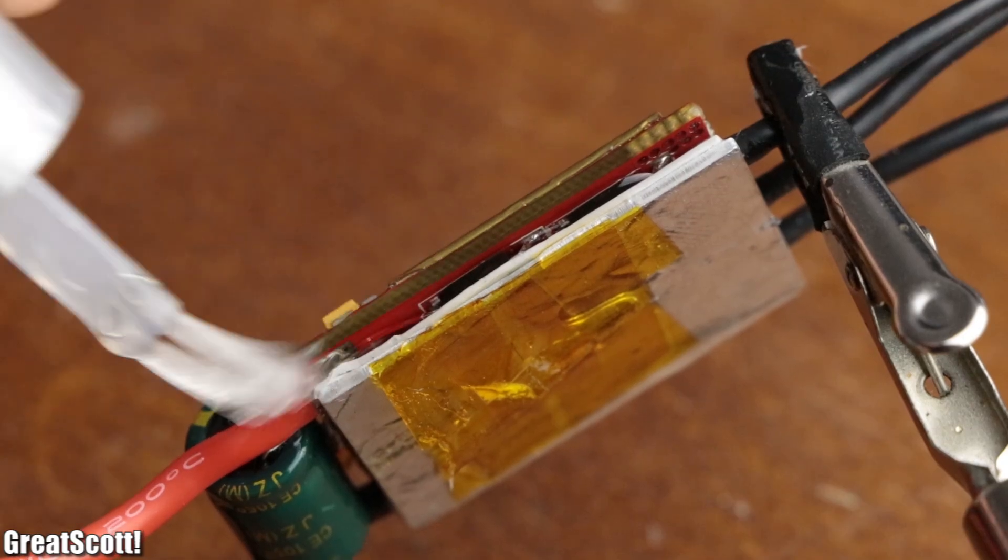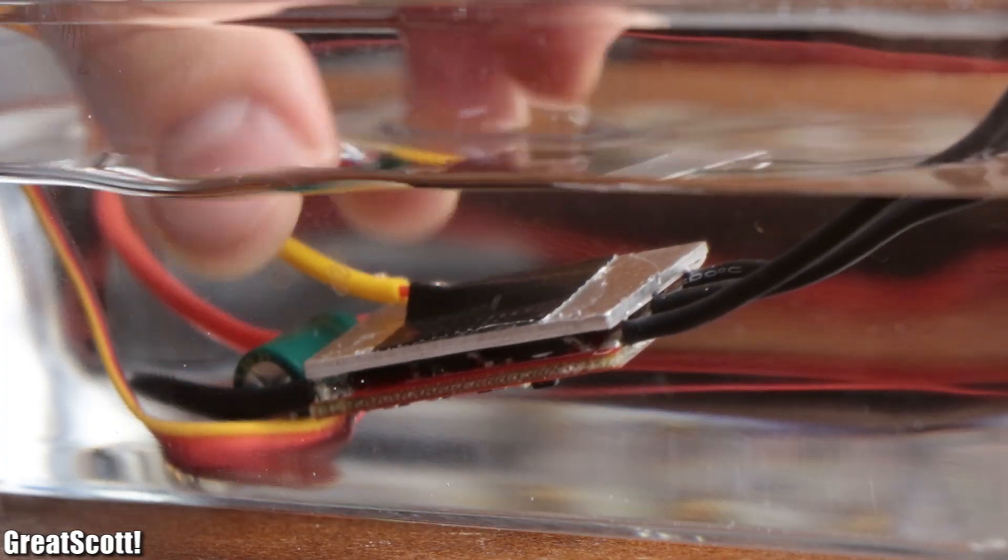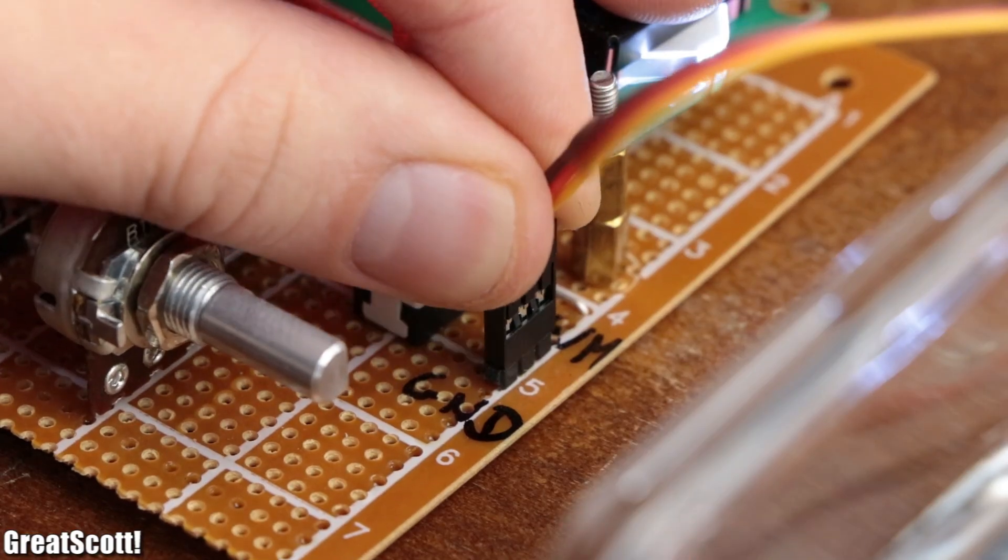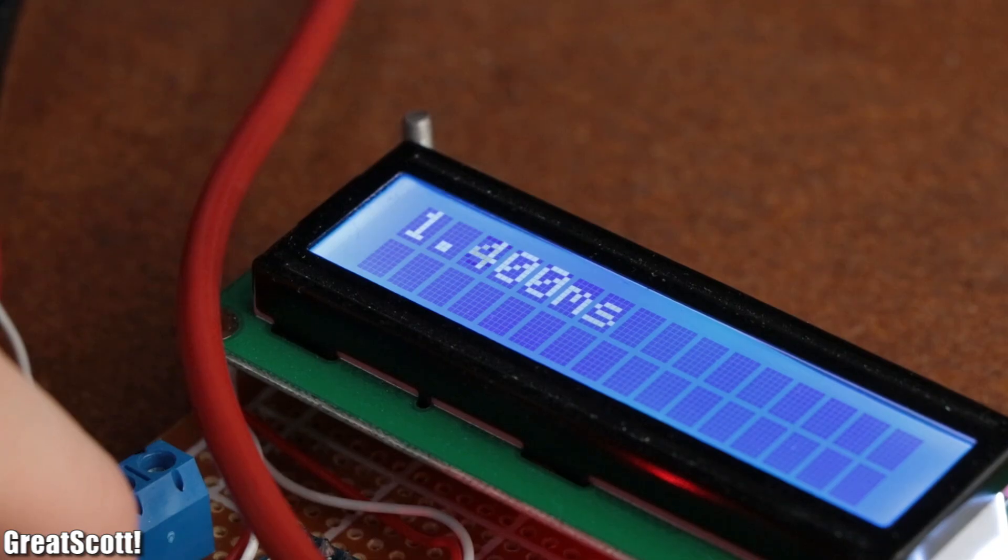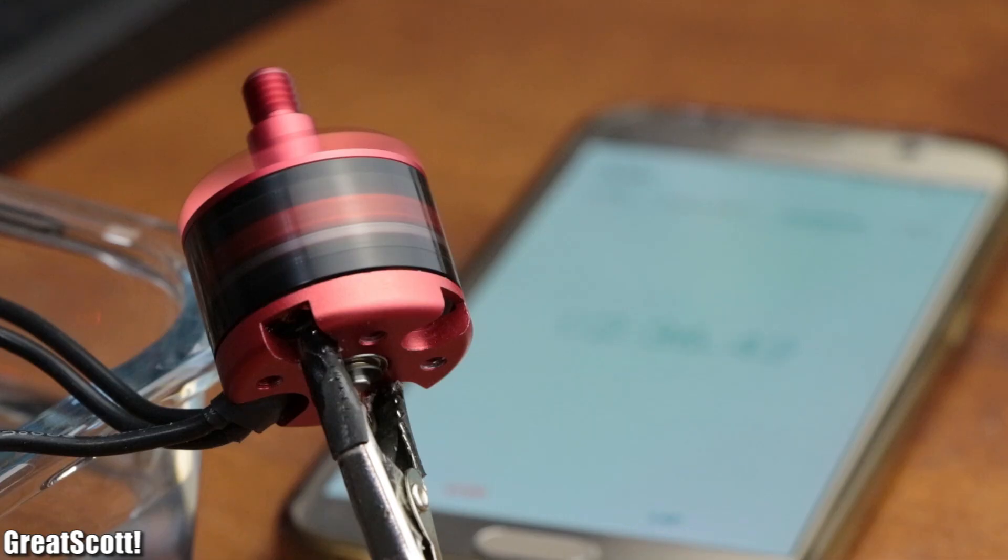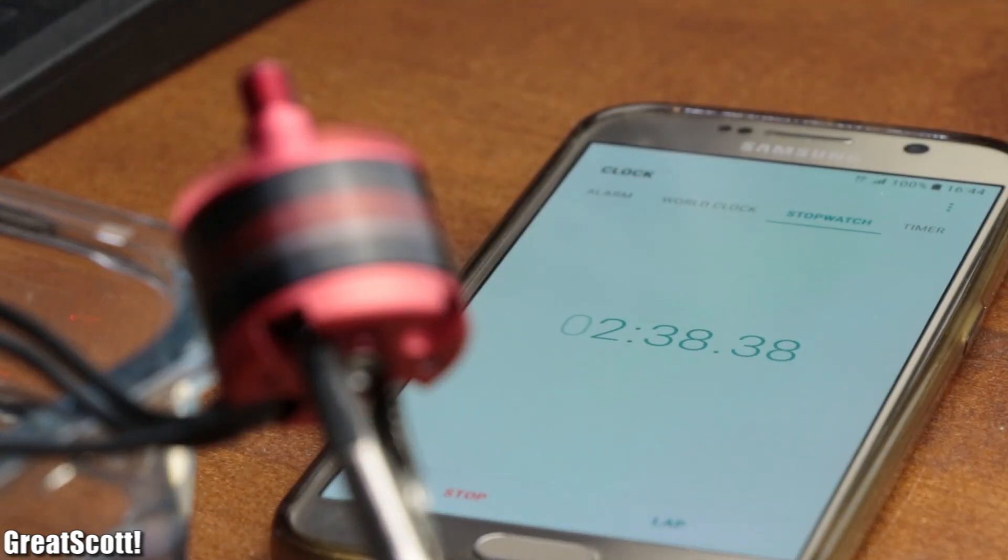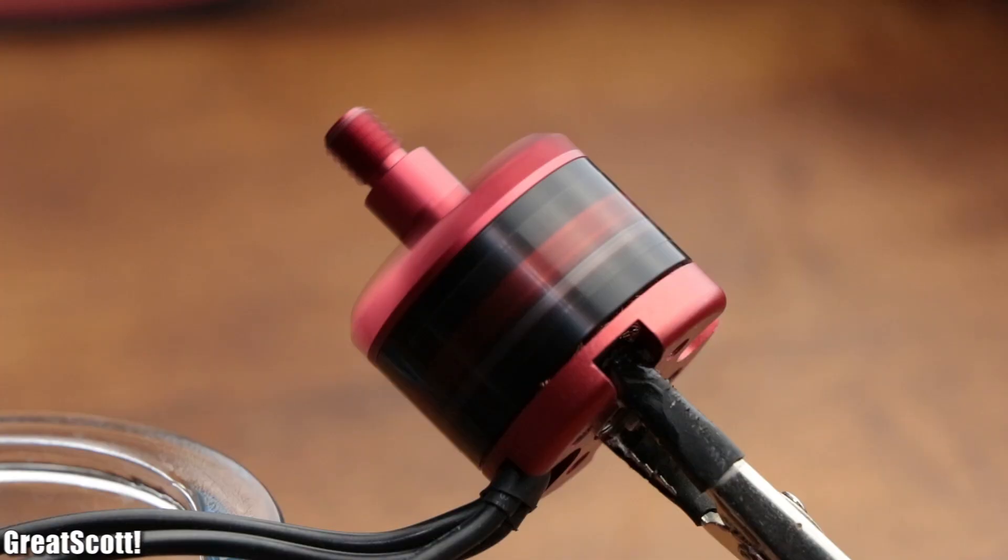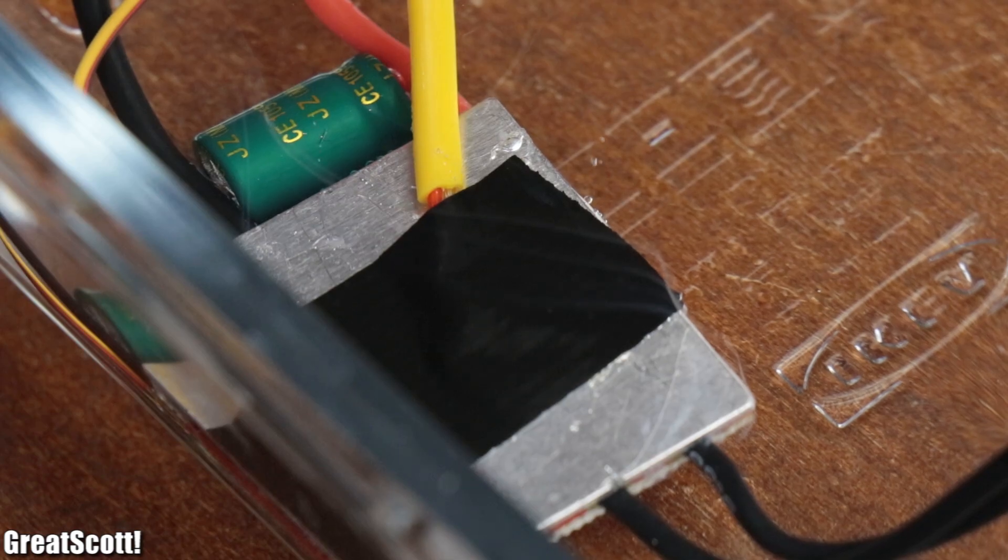But anyway, after I then submerged the ESC and connected the input signal and power, I noticed that the ESC still worked without a problem. But while letting the motor rotate for 10 minutes I also noticed that its speed was fluctuating and bubbles were produced by the ESC.